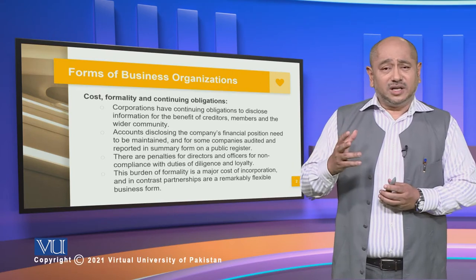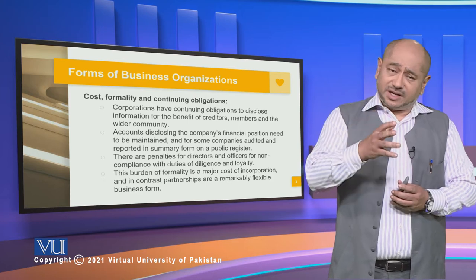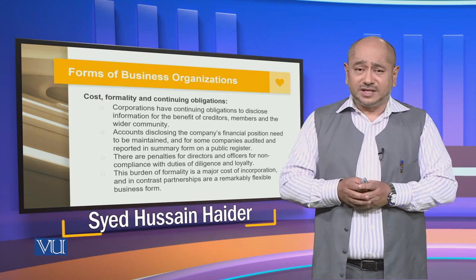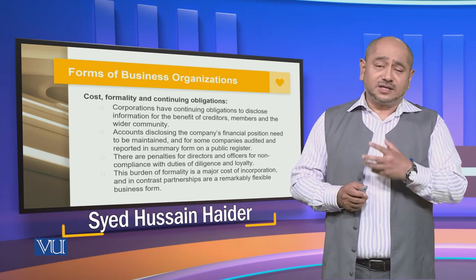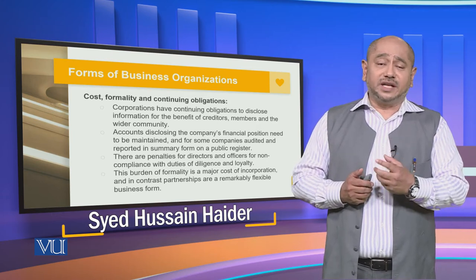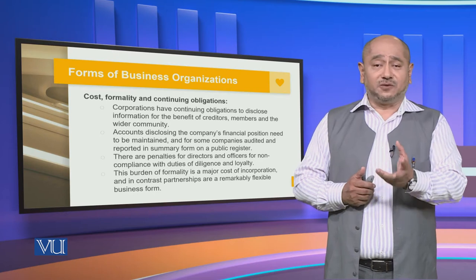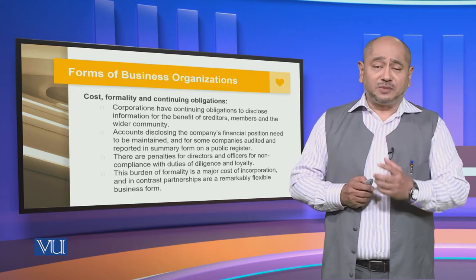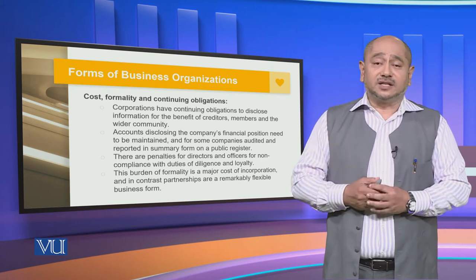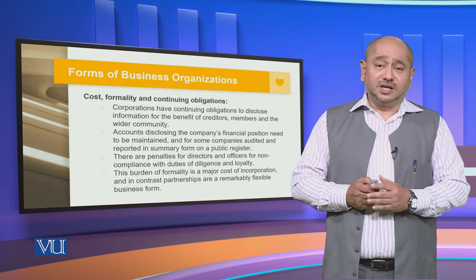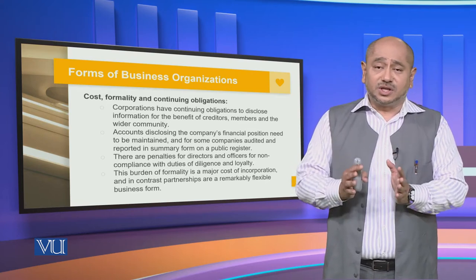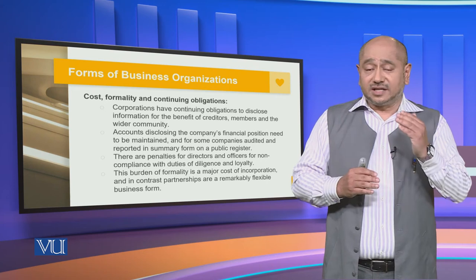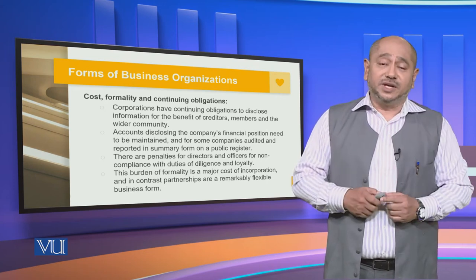For a corporate business, there is an additional cost, different formalities, and continuing obligations. The cost includes what corporations have to incur to maintain auditor accounts and to submit different forms — for example, form 29 or form 27 — and dozens of other forms which have to be submitted as part of the formalities. There is also a continuing obligation, such that on the death of a director or an important shareholder, the company tends to continue as if nothing has happened. The difference between corporate business and partnerships is that there is more cost, more formality, and a continuing obligation.